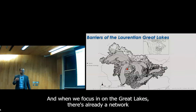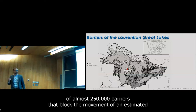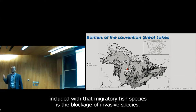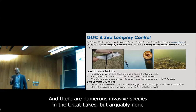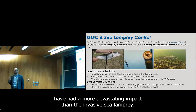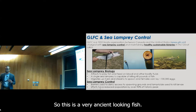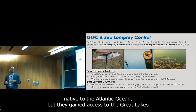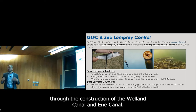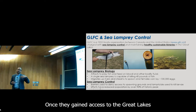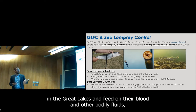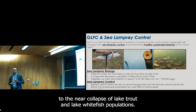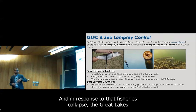When we focus on the Great Lakes, there's already a network of almost 250,000 barriers that block the movement of an estimated 120 migratory fish species. Included with those migratory species is the blockage of invasive species, and arguably none have had a more devastating impact than the invasive sea lamprey. This is a very ancient-looking fish. They are native to the Atlantic Ocean, but gained access to the Great Lakes in the early 19th century through the construction of the Welland Canal and Erie Canal. Because of their devastating feeding habits — attaching to fish and feeding on their blood and other bodily fluids, usually killing that fish — they've contributed to the near collapse of lake trout and lake whitefish populations. In response to that fisheries collapse, the Great Lakes Fishery Commission was formed.